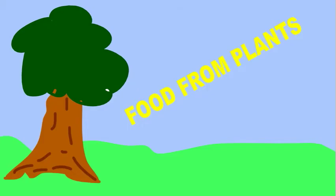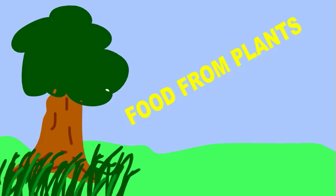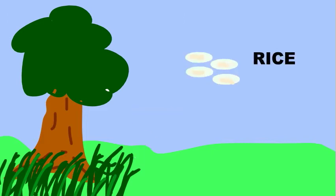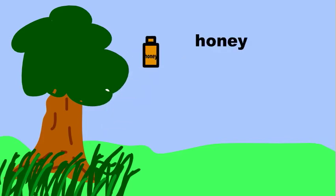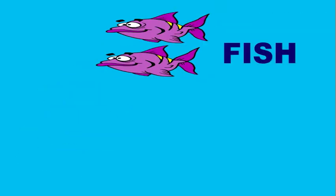Hi, I am Karishma of class 4th F. I am presenting my project on Food. Food from plants includes rice, honey, grapes, vegetable tomatoes. Food from animals includes eggs from hen, milk from cow, and fish. Thank you.